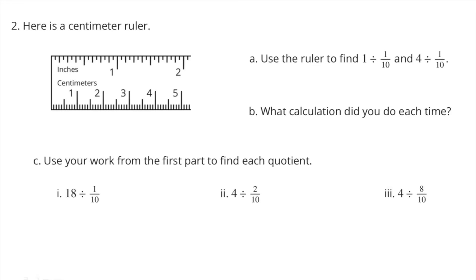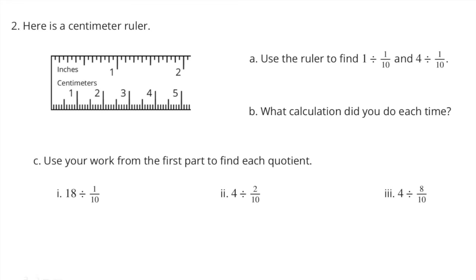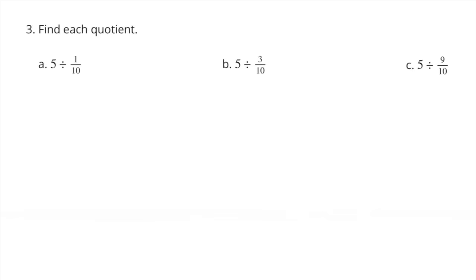4 divided by 2 tenths. There are 20 sets of 2 tenths in 4. 4 divided by 2 tenths equals 20. 4 divided by 8 tenths. There are 5 sets of 8 tenths in 4. 4 divided by 8 tenths equals 5.